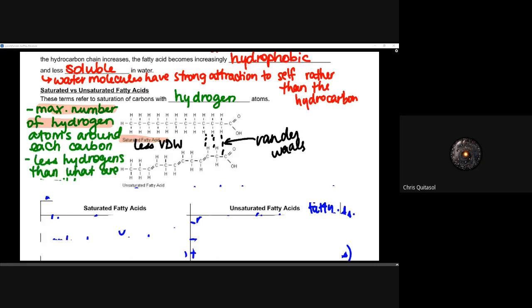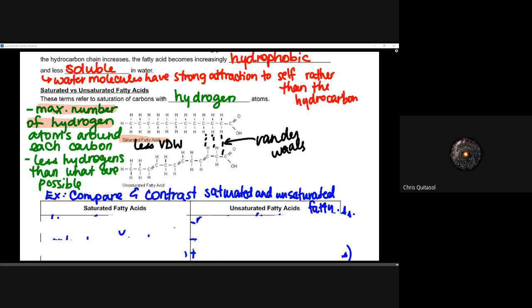A quick way to remember: saturated fatty acids have the maximum possible number of hydrogens. In an unsaturated fatty acid, there are fewer hydrogens than the maximum possible, as a result of double bonds. Those double bonds create structural differences that affect van der Waals forces. Unsaturated fatty acids can undergo more van der Waals attractions, whereas saturated fatty acids have fewer.